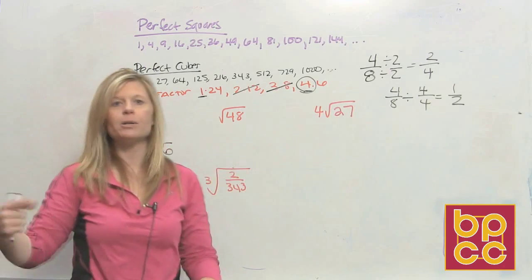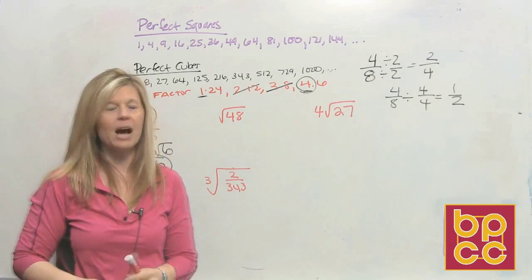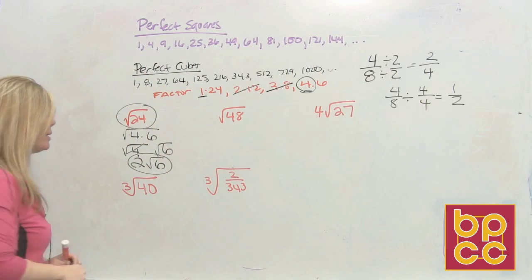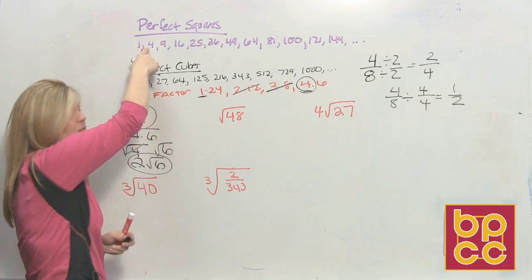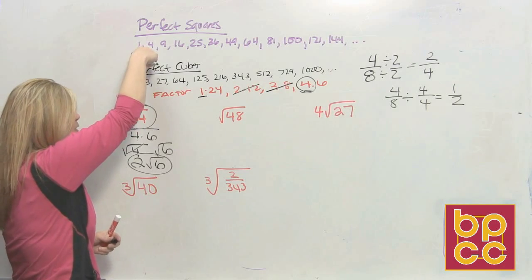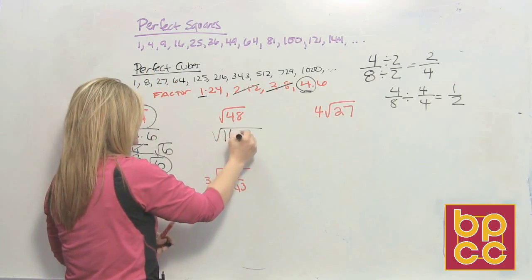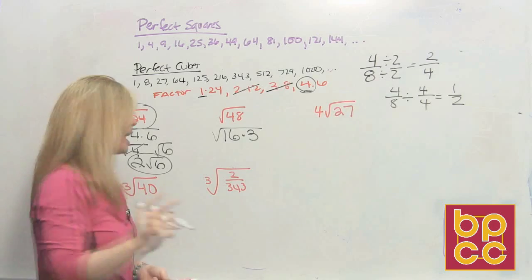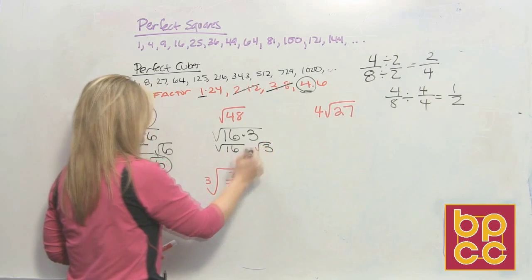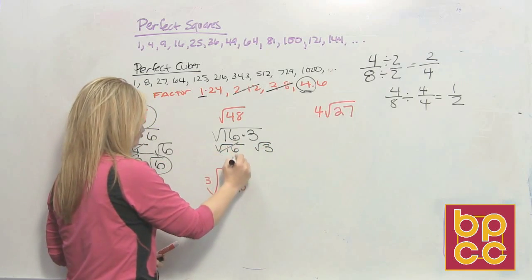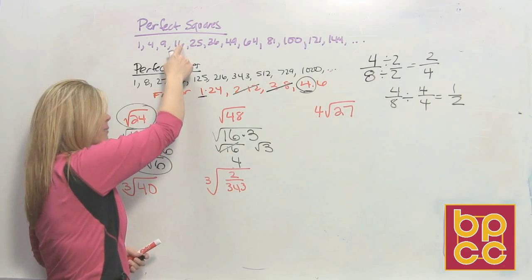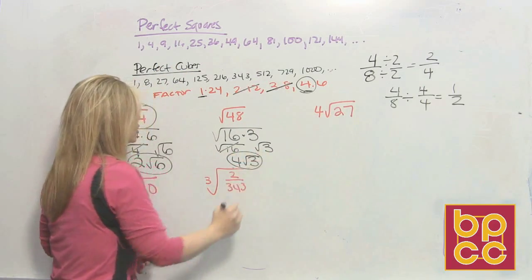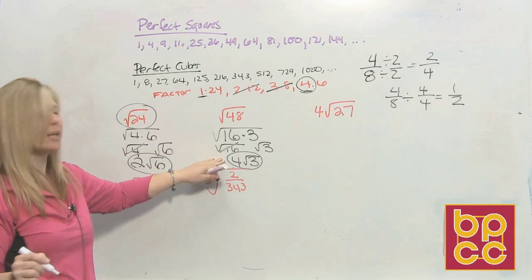Now let's go to the square root of 48. Is there a number times itself that's 48? No, it's not on the list. So find the biggest perfect square that divides into 48. A lot of you would say 4 divides into 48 — yes, but it's not the biggest. The biggest perfect square is 16. So 48 is 16 times 3. You always want to pick the biggest number so you get this done in one step. Square root of 16 is 4, and 3 stays inside. So square root of 48 equals 4 square root of 3.